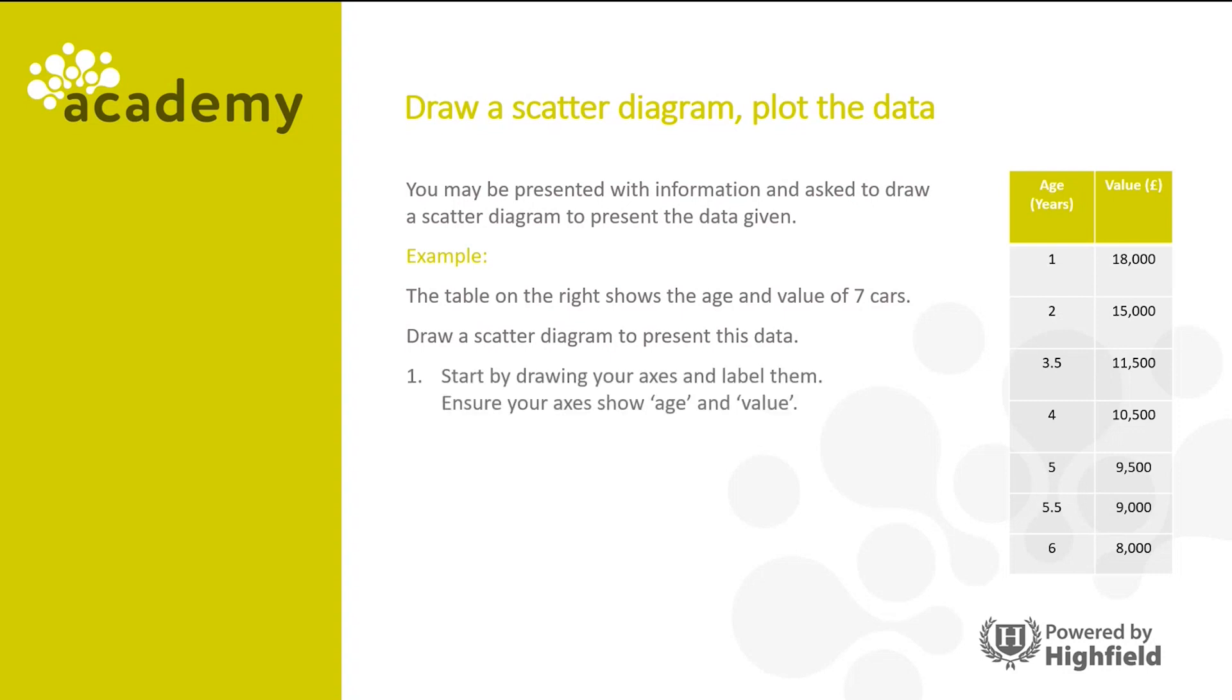So firstly we'll start by drawing our axes and labeling them, ensuring the axes show age and value. Labeling them is very important because this will give you some marks towards your overall grade. Next, ensure the scale is accurate so age goes up to at least six while value goes up to at least 18,000.